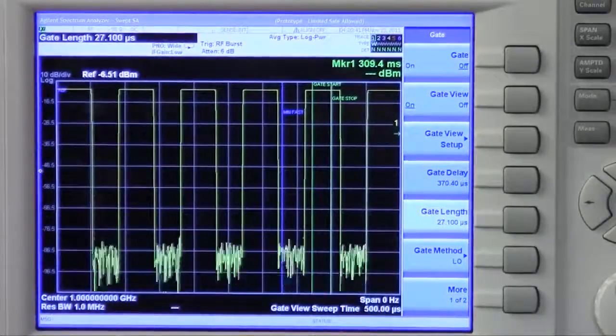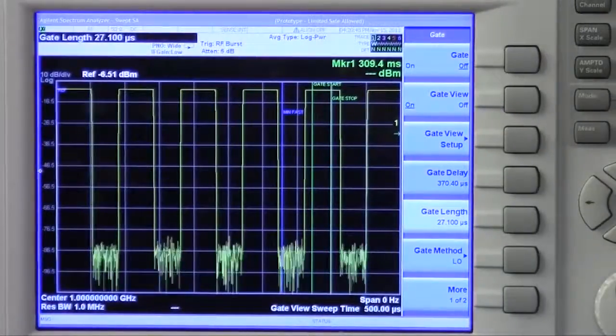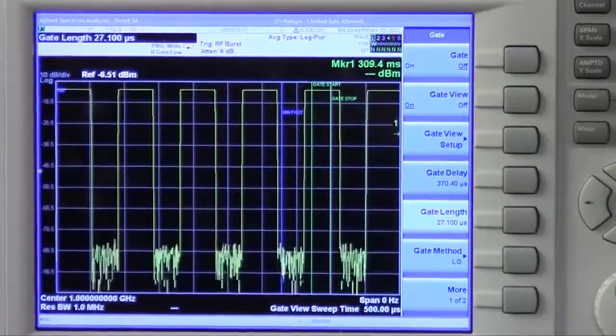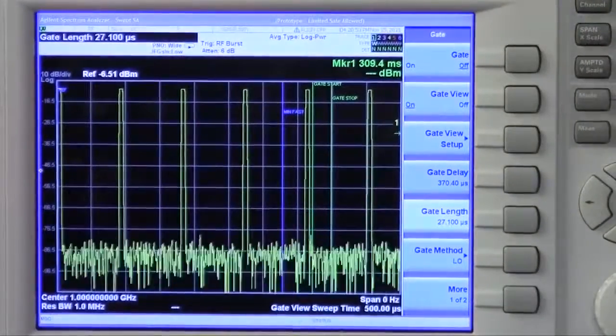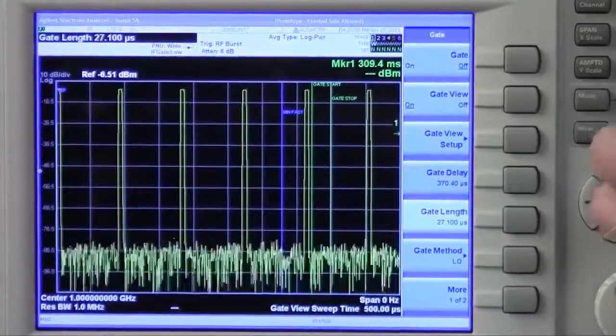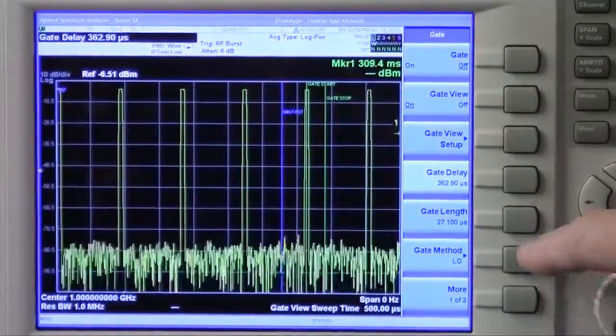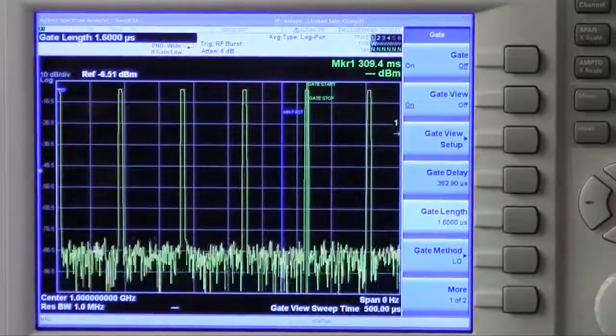That's for a pulse like this where we have about fifty percent duty cycle. So this is a fifty microsecond pulse width. Now if I change the pulse width to five microseconds, now you can see we're going to have difficulty.